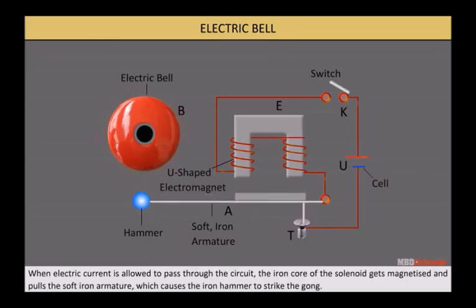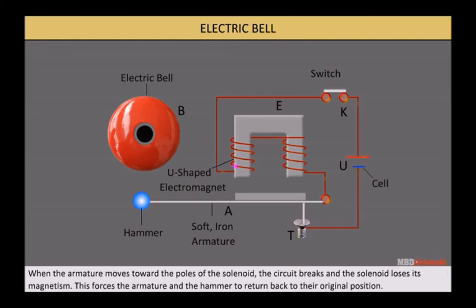When electric current is allowed to pass through the circuit, the iron core of the solenoid gets magnetized and pulls the soft iron armature, which causes the iron hammer to strike the gong. When the armature moves toward the poles of the solenoid, the circuit breaks and the solenoid loses its magnetism. This forces the armature and the hammer to return back to their original position.